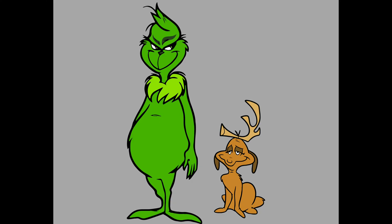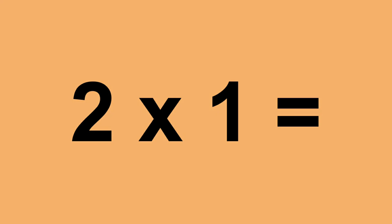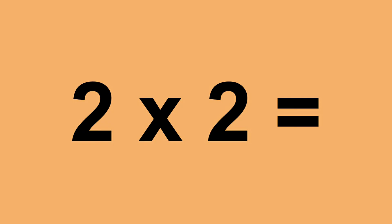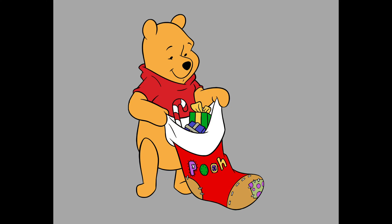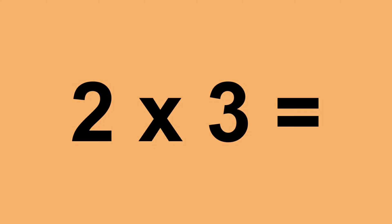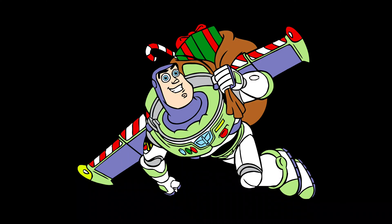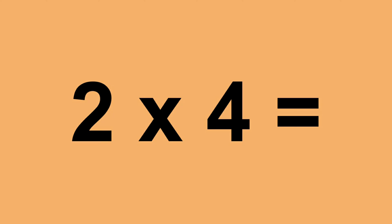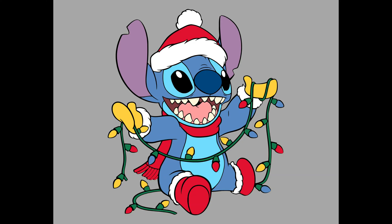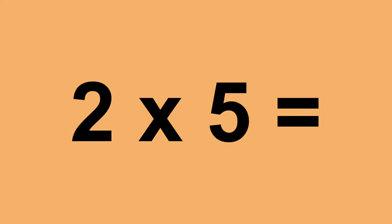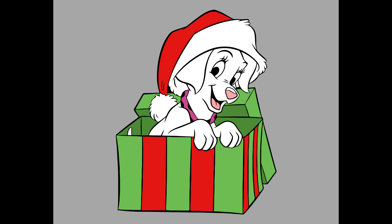Two times zero equals zero. Two times one equals two. Two times two equals four. Two times three equals six. Two times four equals eight. Two times five equals ten. Two times six equals twelve.